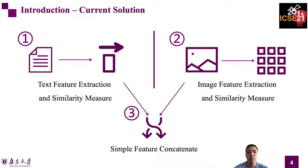Existing researchers analyze these two parts separately to extract features. For textual descriptions, existing approaches extract keywords and normalize them according to a predefined vocabulary. For app screenshots, they treat each screenshot as a whole and extract image features represented as numeric vectors. After obtaining results from the two parts, most work simply concatenates image information and text information. However, we think this kind of approach can cause much valuable information to be missing, and the relationship between textual descriptions and app screenshots is also left out.